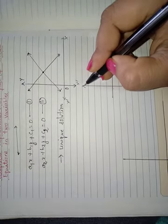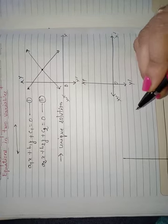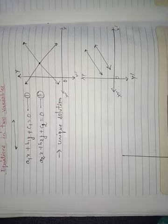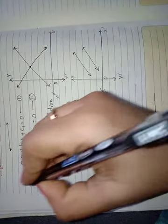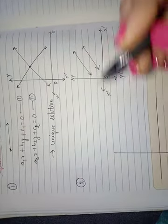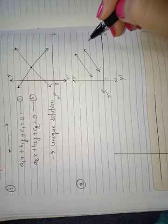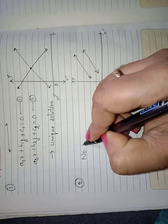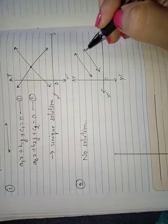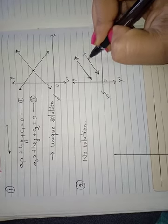If the graphs of the two linear equations give two parallel lines, that is the second possibility. If these lines are parallel to each other, it means there should be no solution. If we draw the lines of any pair of linear equations and get two parallel lines, then there should be no solution.